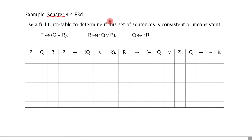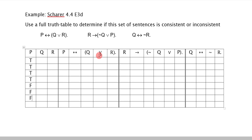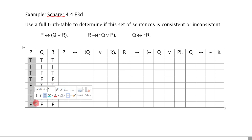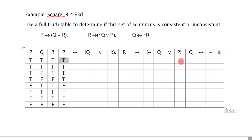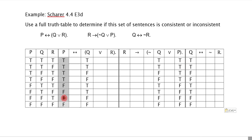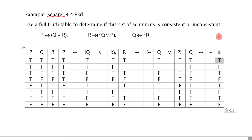Let's go down to the second question: use a full truth table to determine if this set of sentences is consistent or inconsistent. We set it up in the exact same way with a column for each connective. We set up our truth table the same way, and carry through P, P, Q, Q, Q, and the R values.